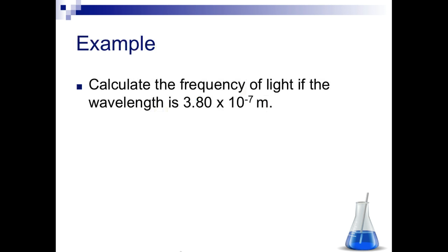So let's look at an example problem. Calculate the frequency of light if the wavelength is 3.8 times 10 to the minus 7th meters. So the first thing we're going to do is we need our equation, c equals lambda nu, or wavelength times frequency. So we know that our c is 3.00 times 10 to the 8th is equal to our wavelength, 3.8 times 10 to the negative 7th meters times frequency.